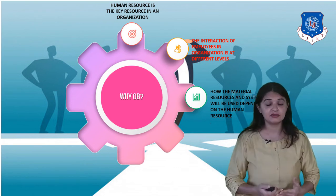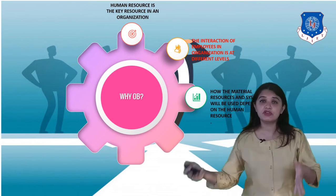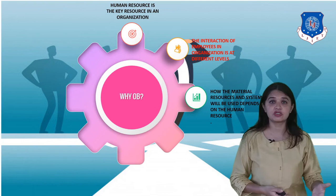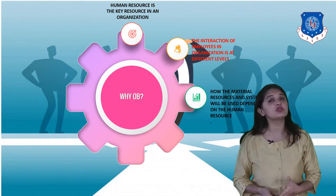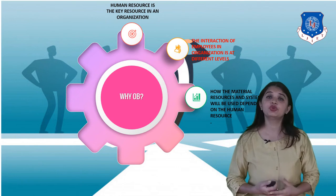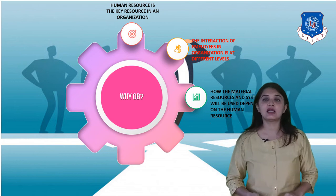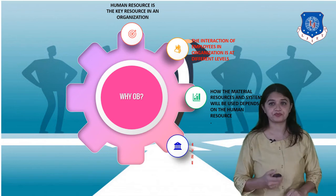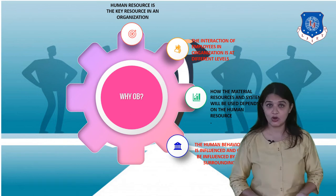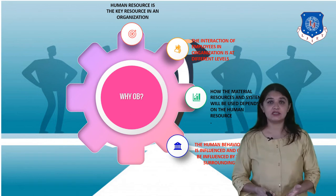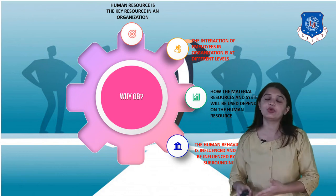For an organization to become successful or profitable, it will have to go according to its plan and vision. To reach that goal, certain resources like financial resources, raw materials, or systems have to be used. But how these resources are used depends on one resource — the human resource. Human behavior is influenced by the surrounding and vice versa: human beings are influenced by the surrounding and can also influence it.